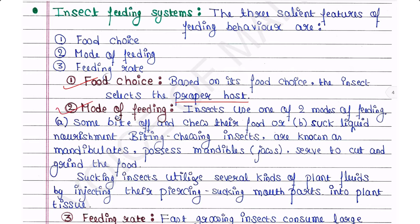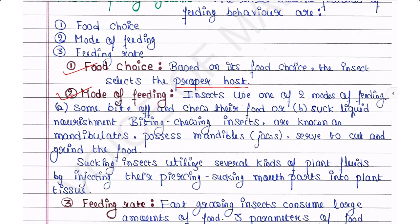Mode of feeding: insects use one of two modes of feeding. Some bite off and chew their food, and some suck liquid nourishment. Biting and chewing insects are known as mandibulates because they possess mandibles or jaws, which serve to cut and grind food. Sucking insects utilize several kinds of plant fluids by injecting their piercing-sucking mouthparts into plant tissue.